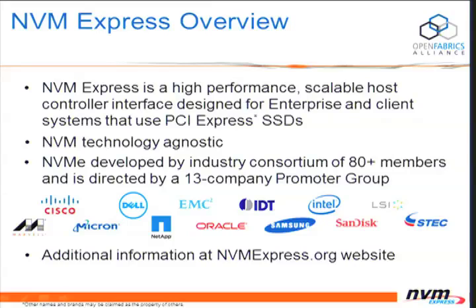The NVM Express effort started about four and a half years ago. A number of companies came together and recognized a growing gap between processor capabilities and the IO's ability to handle processing all this data. It was developed by a consortium of over 80 members — we're actually approaching 95 members now — and the organization is directed by a 13-company promoter group. There is additional information on the NVM Express org website, which is being redesigned and relaunched in the next couple of weeks, so it will be easier to find information and more aesthetically pleasing.